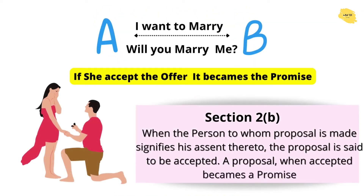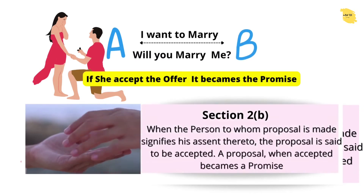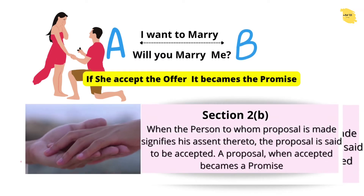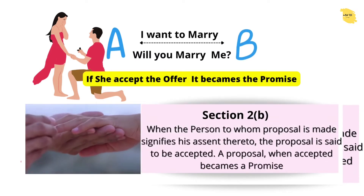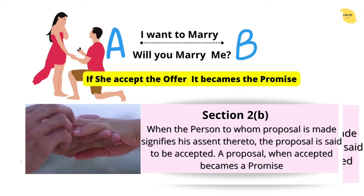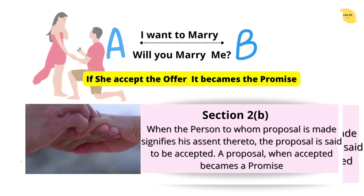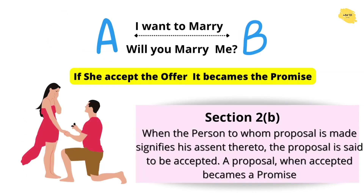Now if B says yes, 'I will marry you and accept that offer' — we can also call it an offer — if we accept that offer, what is this? It becomes a promise. Section 2(b) says: when the person to whom the proposal is made signifies his assent to it, the proposal is said to be accepted. A proposal when accepted becomes a promise.